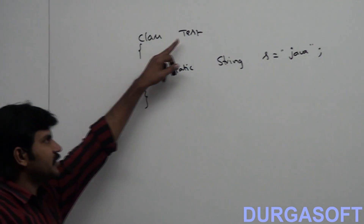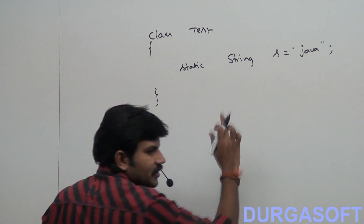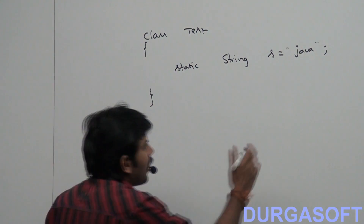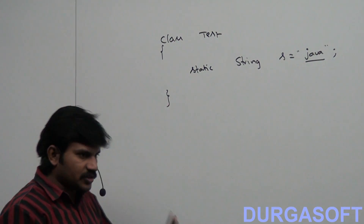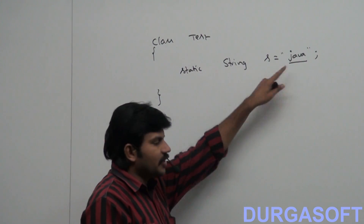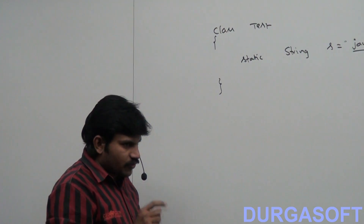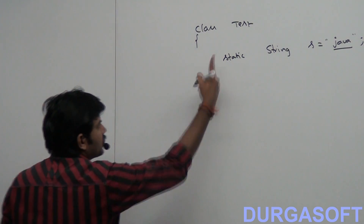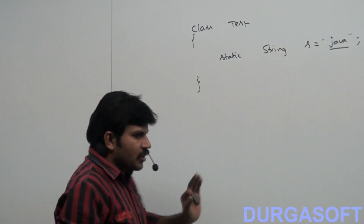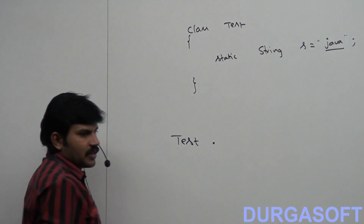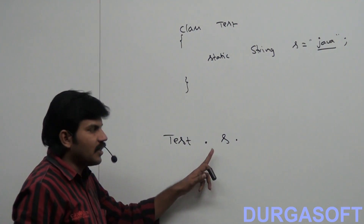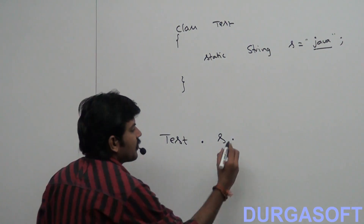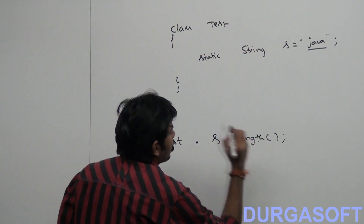Can you tell what is Test? Test is a class. What type of variable is S? S is a static variable of type String. What is the value of S? The value of S is Java. Now I want to print the length of S — how many characters are present in S. That's my requirement.